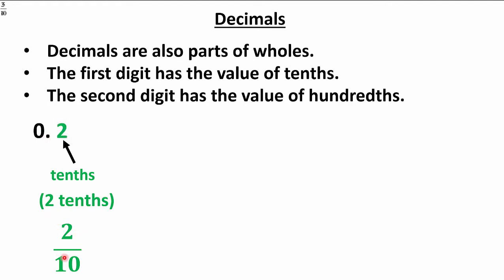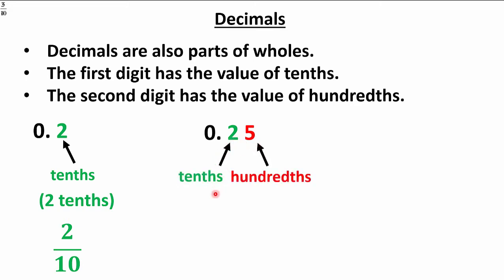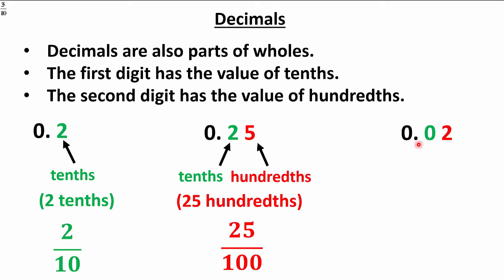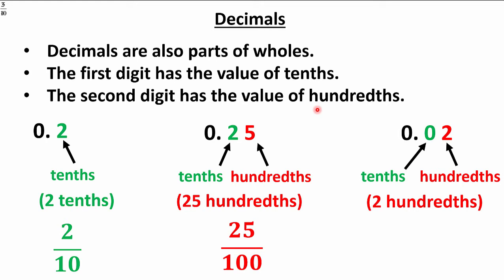Two-tenths as a decimal is 0.2. Now, 0.25 — that's the tenths place, that's the hundredths place — we say twenty-five hundredths, written as 25 over 100. Don't say twenty-five out of a hundred or twenty-five over a hundred — say it right: twenty-five hundredths. And the last one, 0.02: that's tenths, that's hundredths. Cool people say two-hundredths, which looks a lot like two-tenths but the zero makes it a different value. Here we have 0.02 — that's two-hundredths.